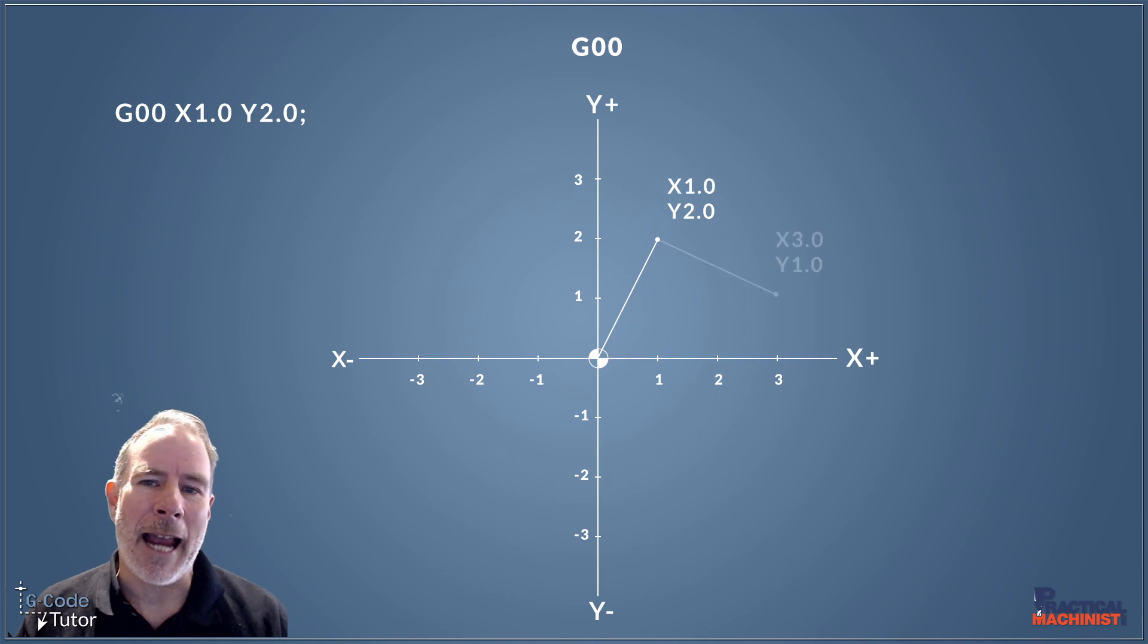Okay, so our next point would be X3Y1. So that's three positions over in X, and one unit up in Y. So that would give us this point. And to write that in G-code, it would look like this. Now we don't need to write G00 again on each line. Once it's active, the machine knows it's active. So we don't need to keep stating it on every single line.